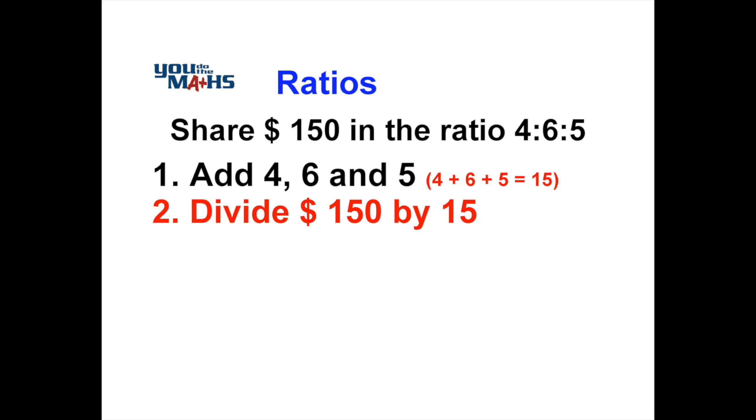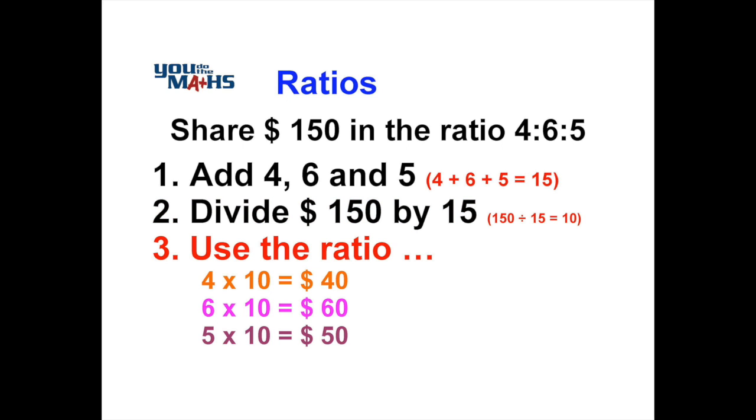We then divide 150 by 15, so we want to work out what each part is worth. This comes to $10. Now what we do is work out what each person gets out of the ratio 4:6:5. Four lots of ten is $40, six lots of ten is $60, and five lots of ten is $50.